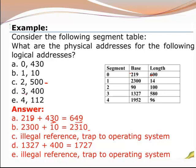Next example: logical address is (3, 400). Segment number 3 has length 580 and we are trying to access offset 400. Since 400 is less than 580, it is a valid address. We add 400 to the base address to get the physical address. In the last question, the logical address is (4, 112). Segment number 4 has limit 96 and we are trying to access offset 112. Since 112 is not less than 96, it is an illegal address and a trap will occur.